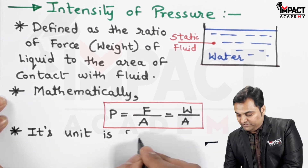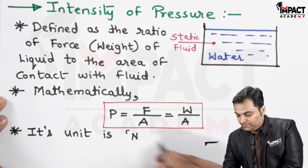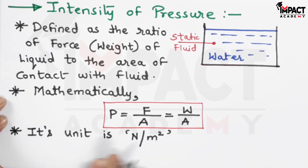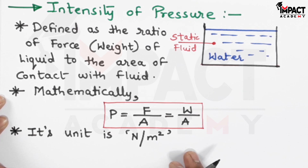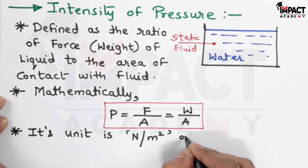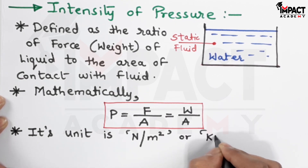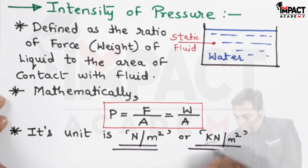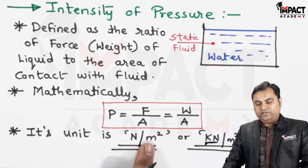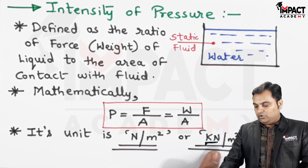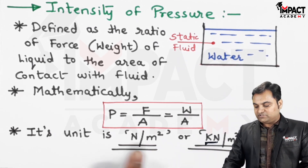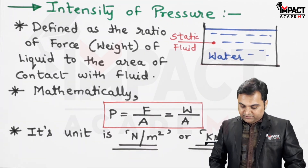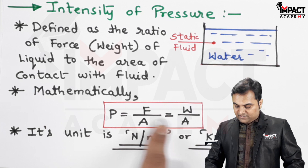The unit of weight is Newton and area is in meter square, so pressure has the unit Newton per meter square. If the weight is in kilonewton, it is kilonewton per meter square. If the area is in centimeter square, it would be Newton per centimeter square or kilonewton per centimeter square, and similarly for mm.